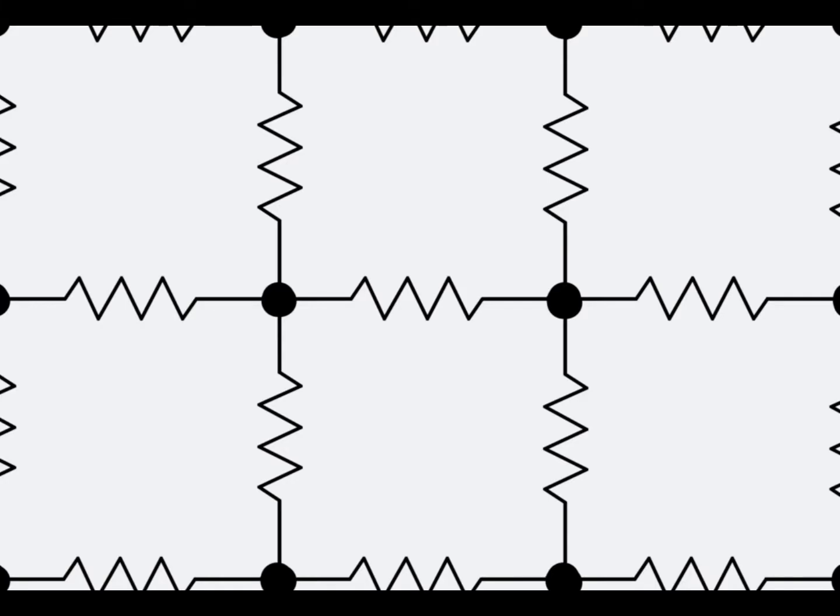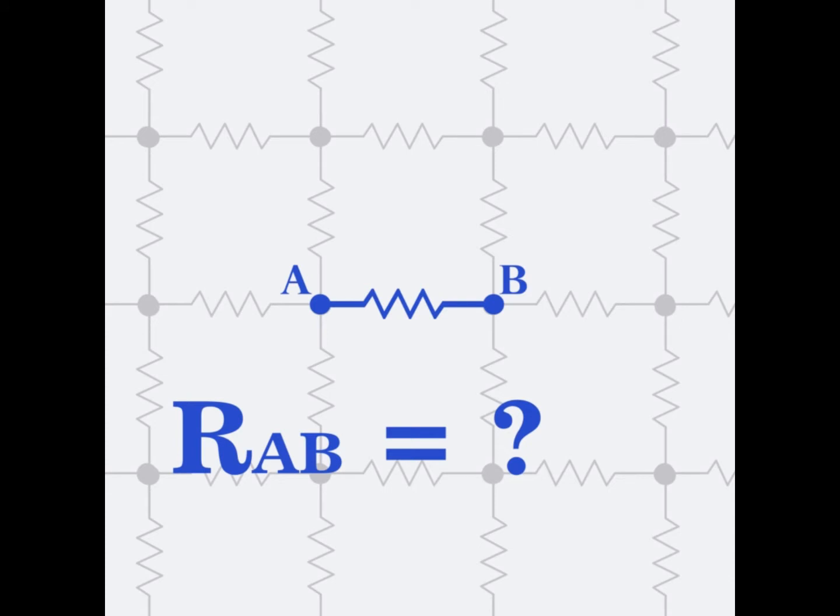Consider the puzzle of an infinite grid of equal value resistors in which each terminal is connected to four resistors. The problem is to find the equivalent resistance across each resistor in this network. One of our viewers proposed this question given to him during an interview.